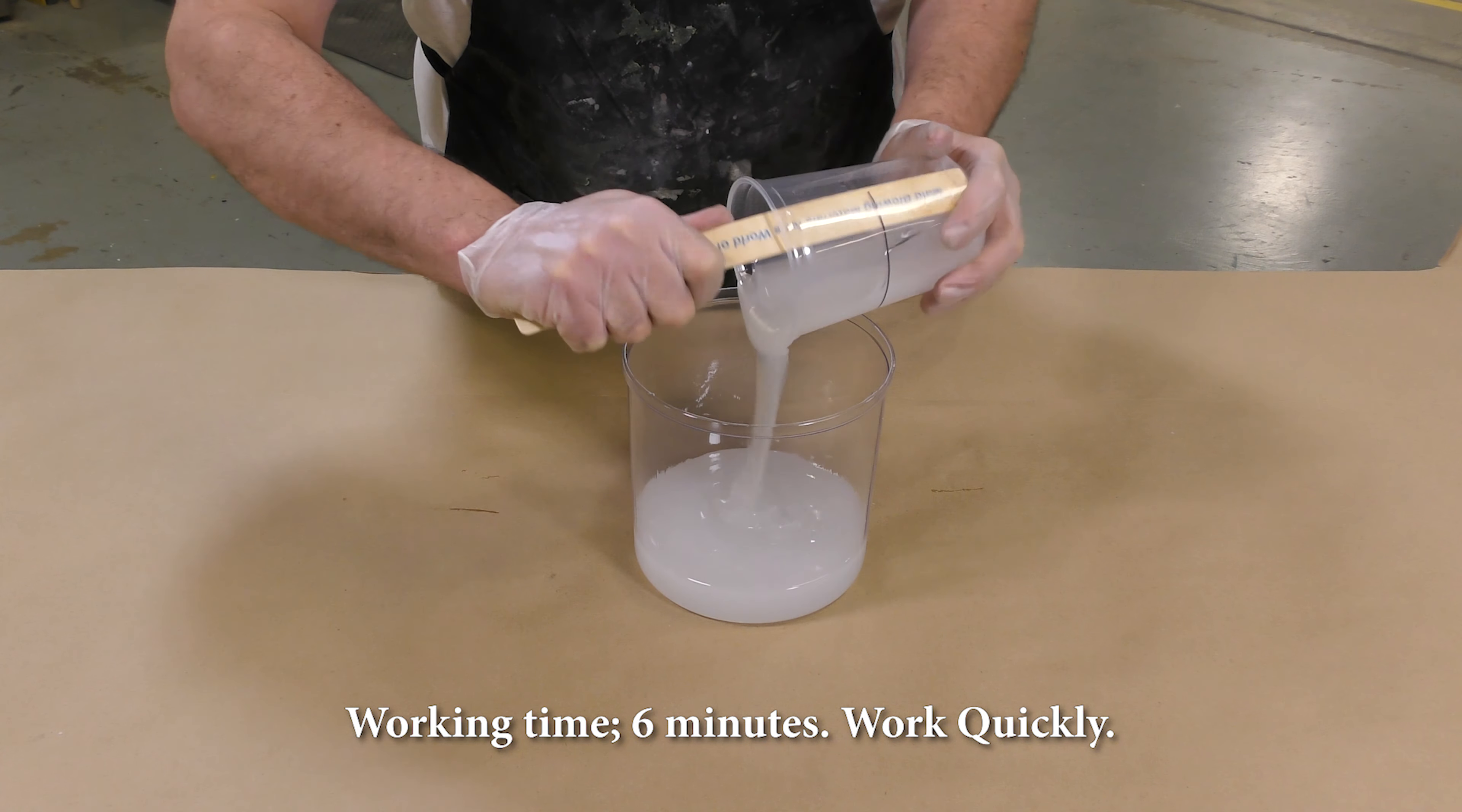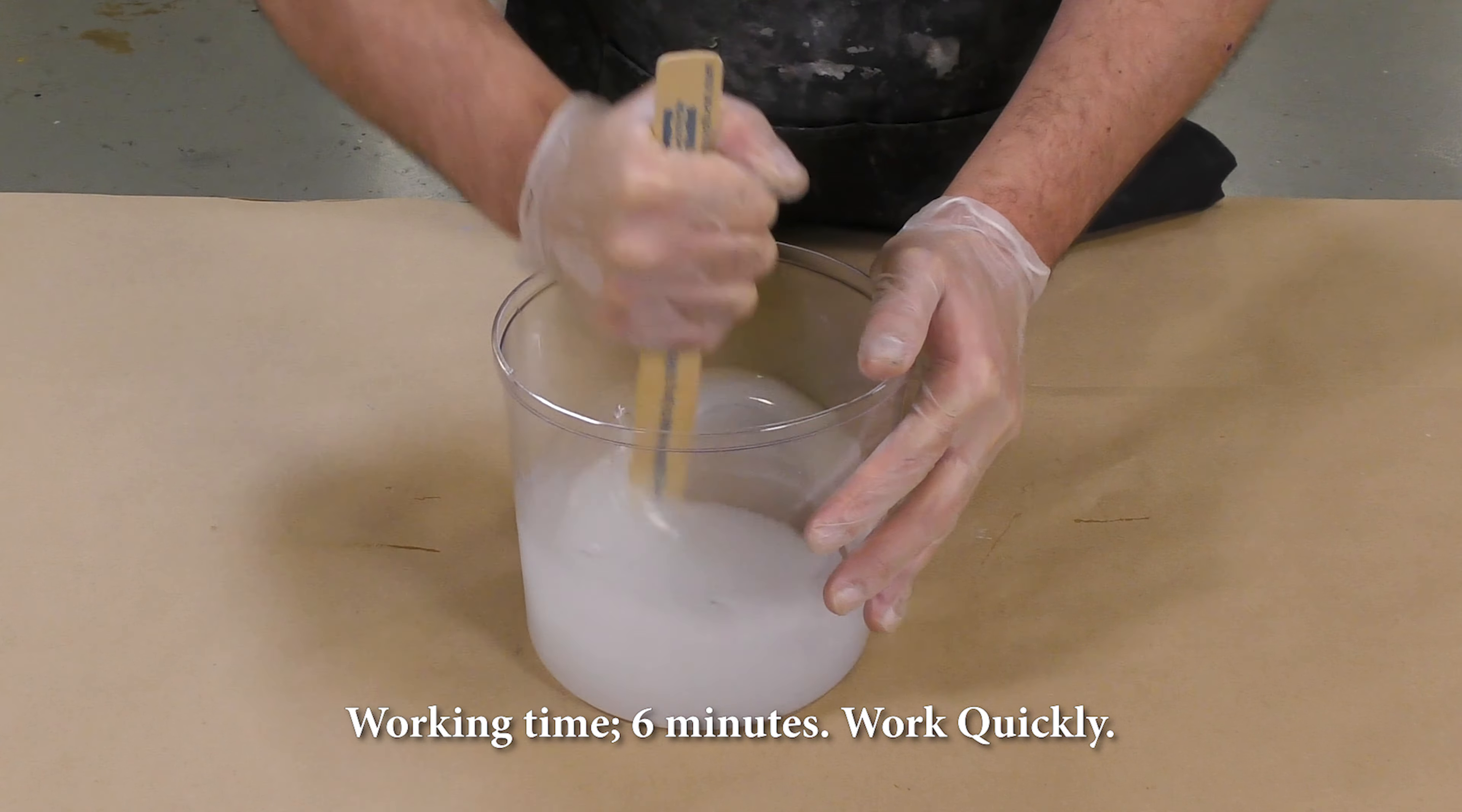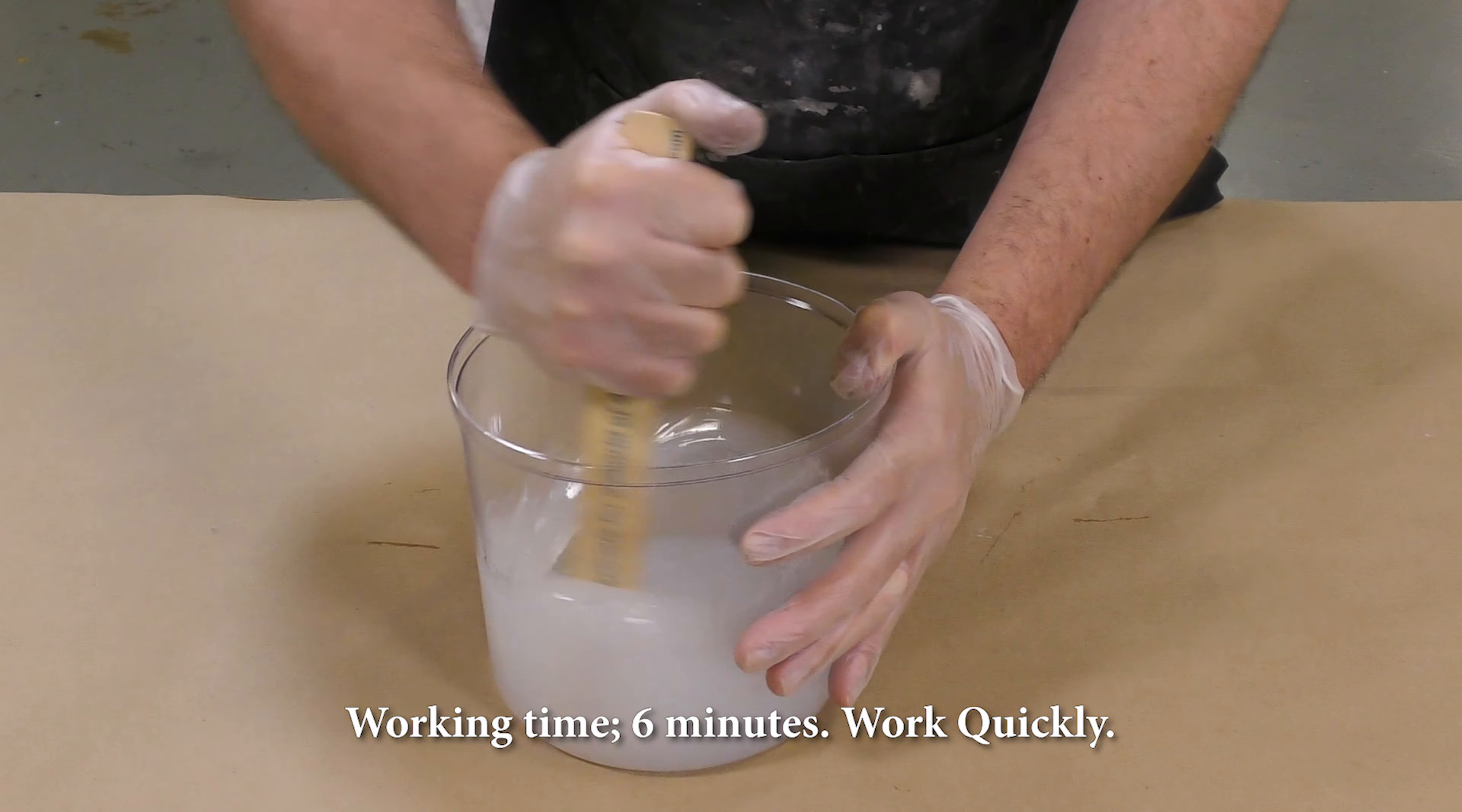In a clean mixing container, we're going to combine the parts together. Always scrape your containers not to waste material. And because this is a clear, translucent product, we want to make sure we mix thoroughly. So scrape the sides and scrape the bottom of your mixing container. There's no color change indicator here of when you're mixed thoroughly. So work fast and work thoroughly by scraping the sides and scraping the bottom.